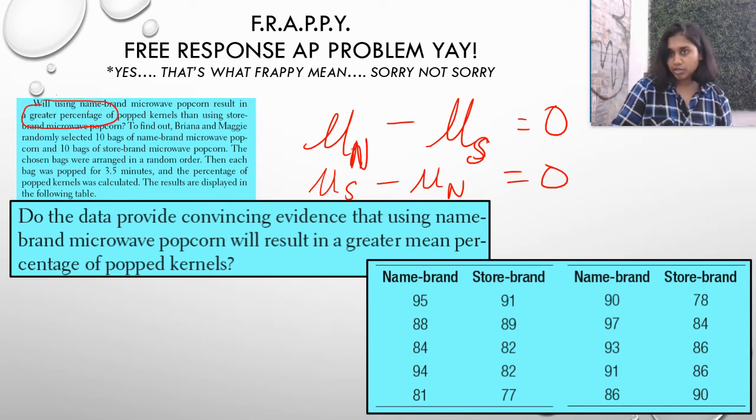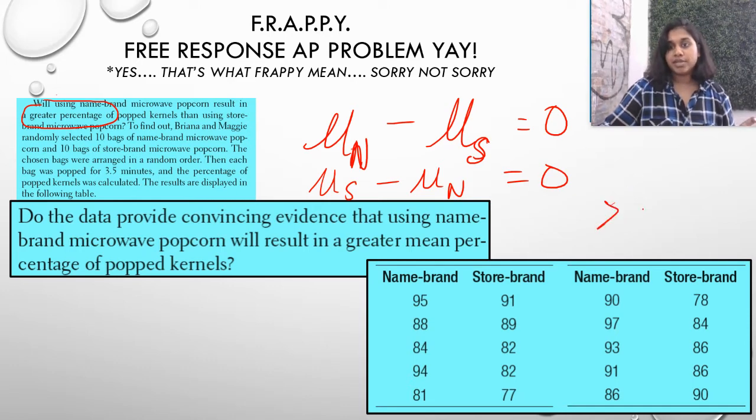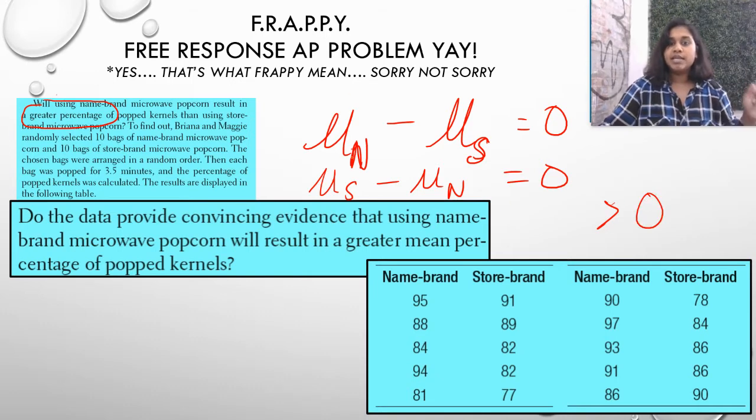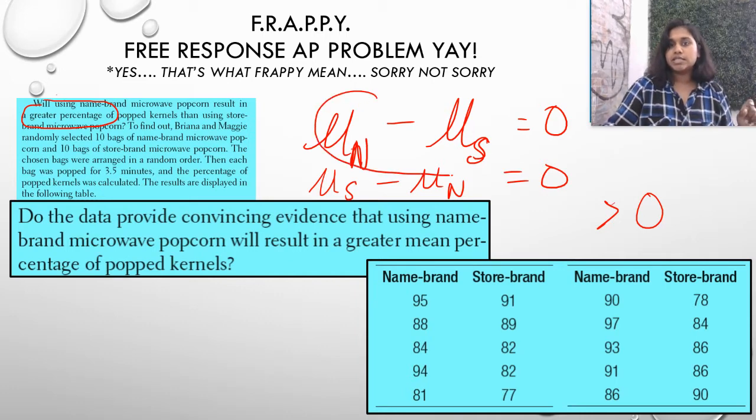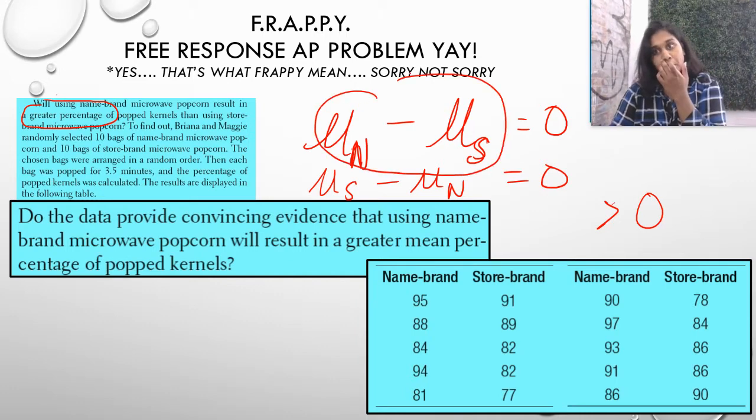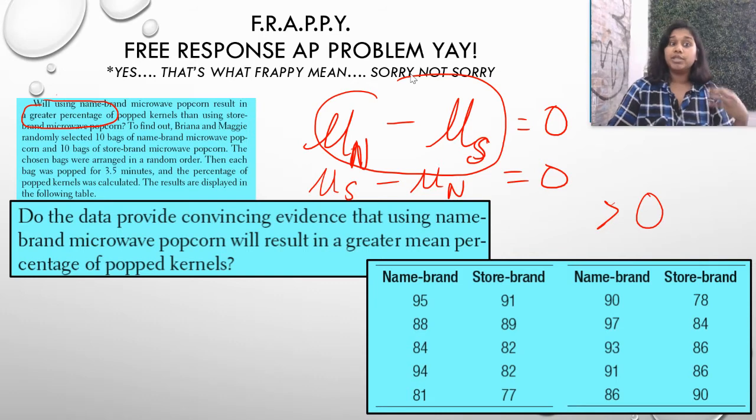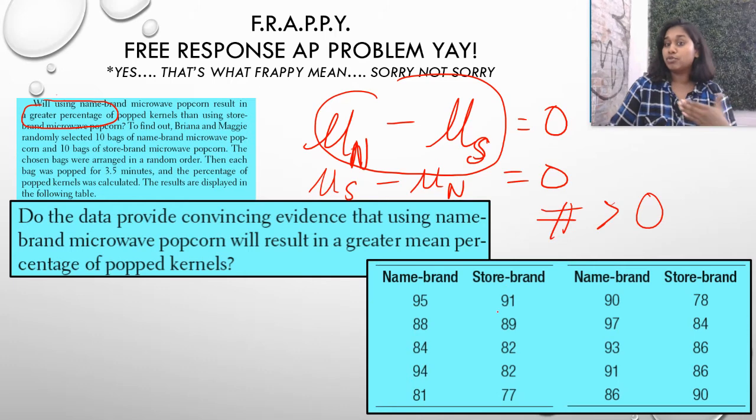Because what we know would just be there is no difference between the percentage of popped kernels, whether you're doing name brand or store brand, that's it. But the alternate is saying that name brand results in a greater percentage. And they gave us that. I'm not making that up on my own. They told us that that's what I'm looking for. So I know that my alternate is going to have to be some sort of greater than zero value. And so now we just have to figure out, is it going to be name brand minus store brand or store brand minus name brand?